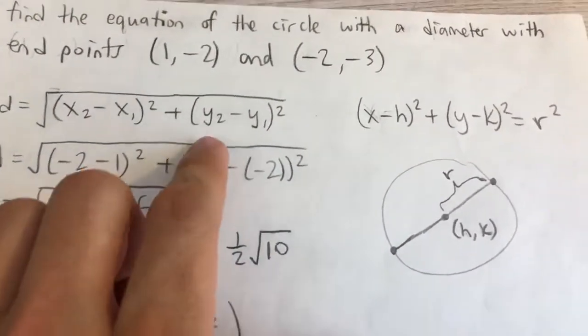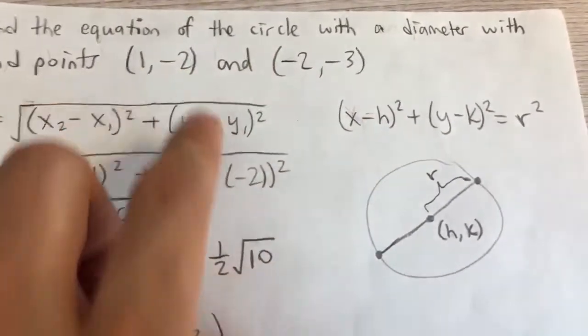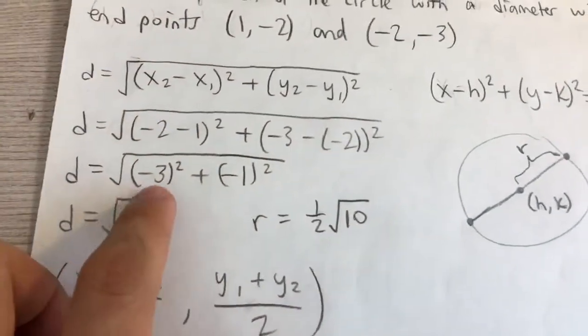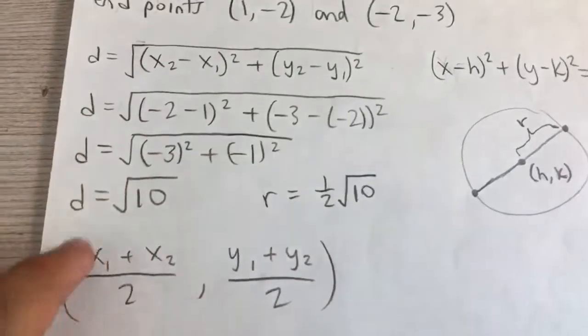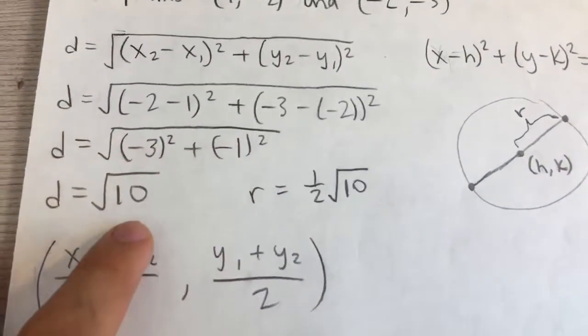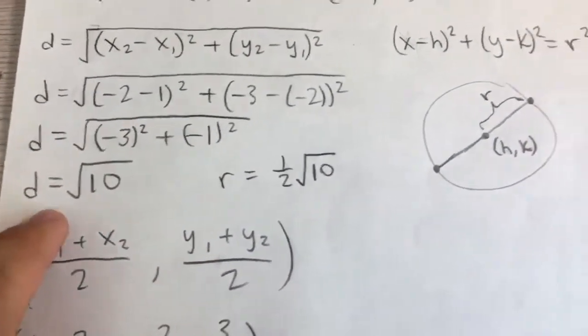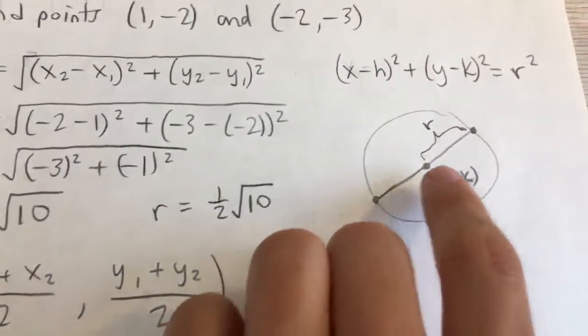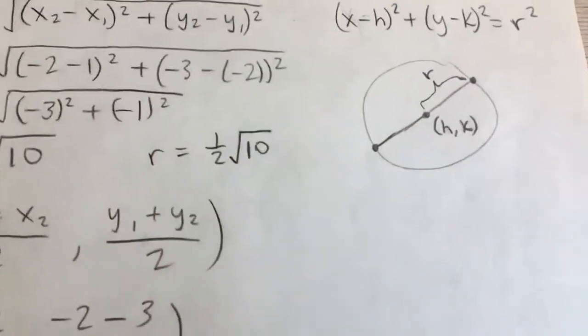And the difference in the y value is -3 minus -2, which gives us that. And so you'll get (-3)² plus (-1)², that'll give you 9 plus 1, which is 10. So our distance between the two points is √10, and so our radius is (1/2)√10.